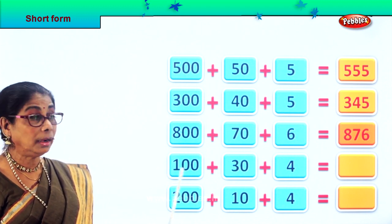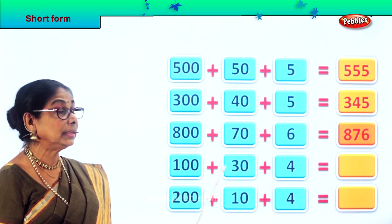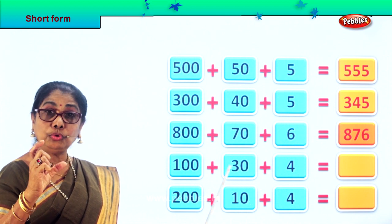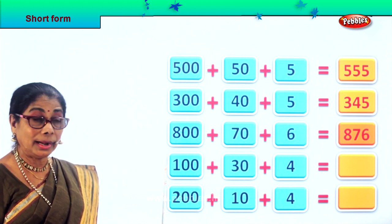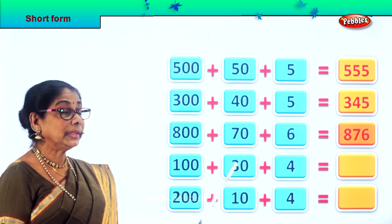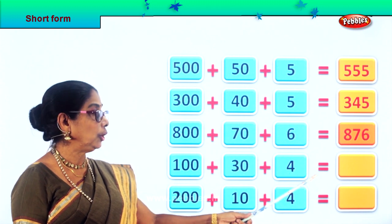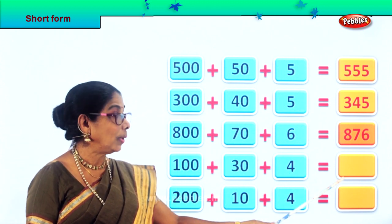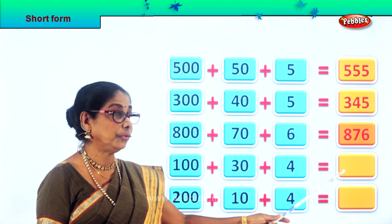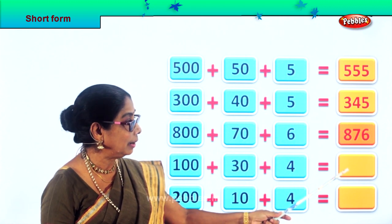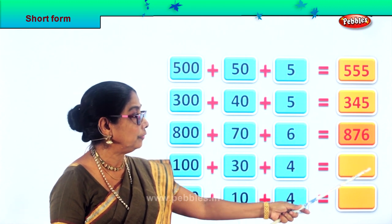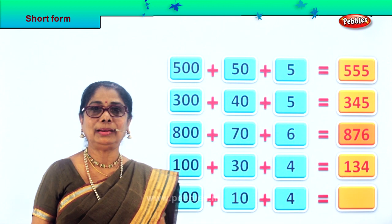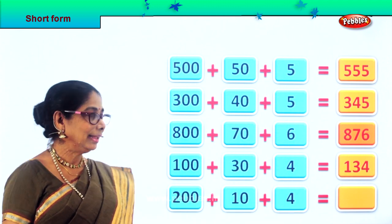Next sum: 100 plus 30 plus 4. We're going to do the short form. 100 plus 30 plus 4 equal to 134.